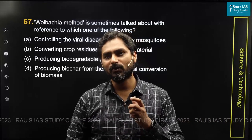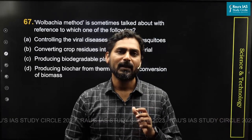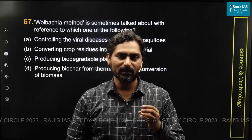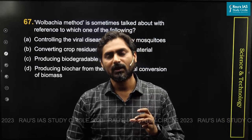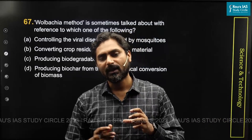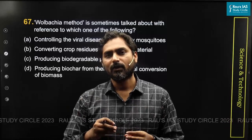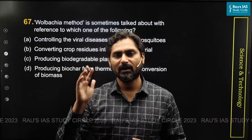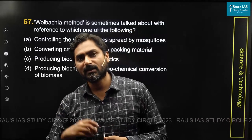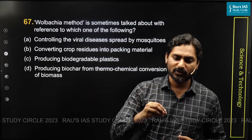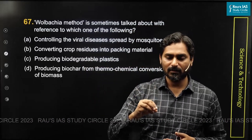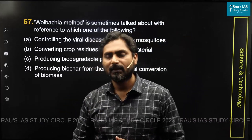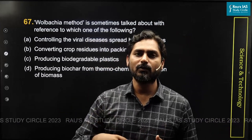In the Wolbachia method, we use male mosquitoes and inject this bacteria into them. When this male mosquito carrying the Wolbachia bacteria mates with a female, the female is not able to reproduce.